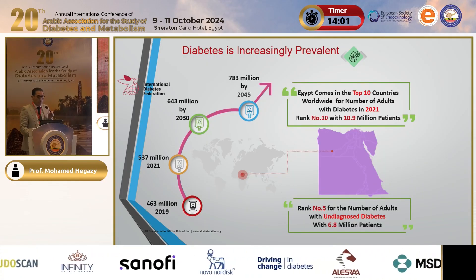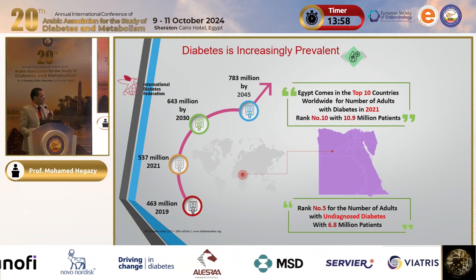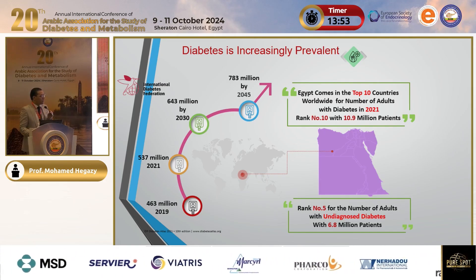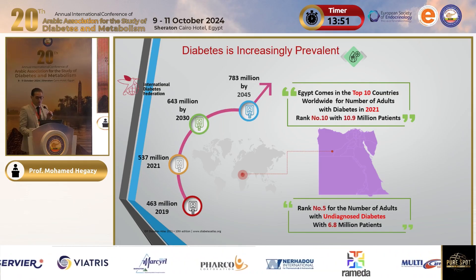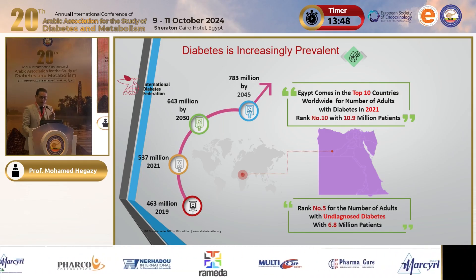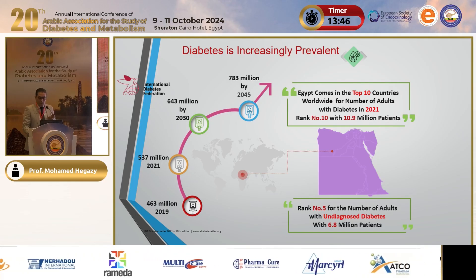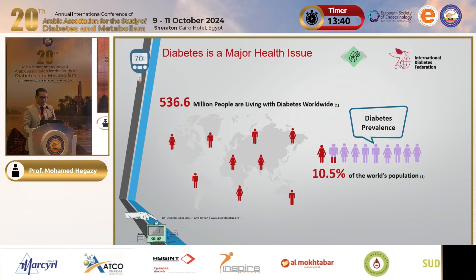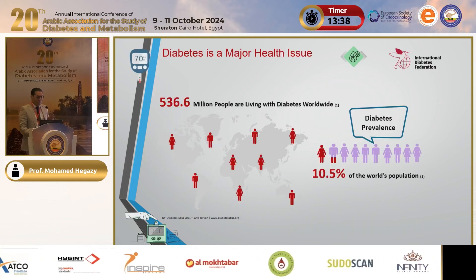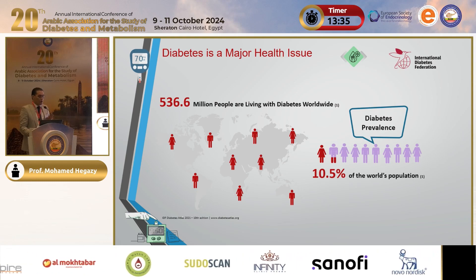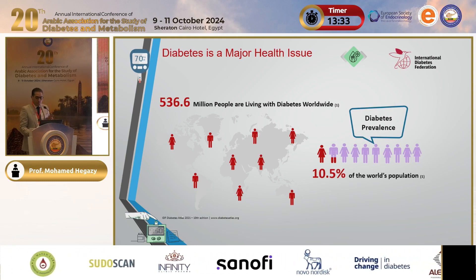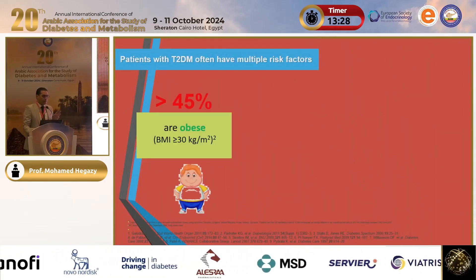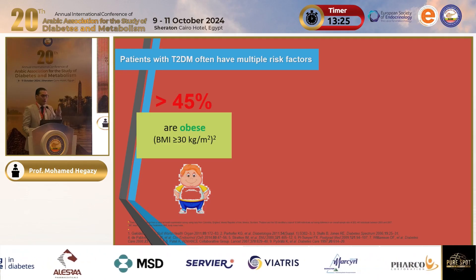Diabetes is increasing in number worldwide. Egypt ranks number 10 among countries and is predicted within the next two years to move into the top five, with 6.8 million adults with undiagnosed diabetes. Worldwide, about 10 percent of the population has diabetes.